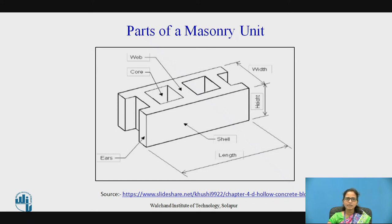These are the parts of a masonry unit. The gross area of the block can be calculated by the area on its bedding face — that is, the total area occupied by the block on its bedding face, which includes the areas of the blocks.